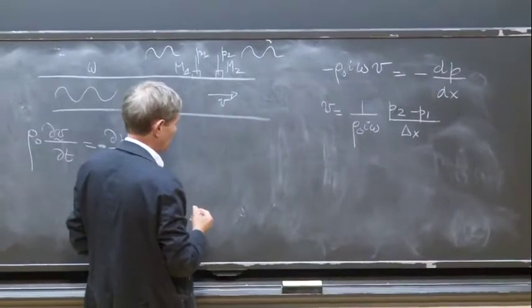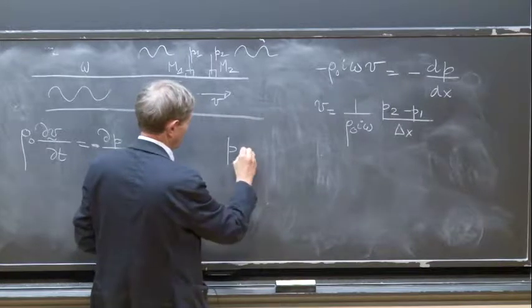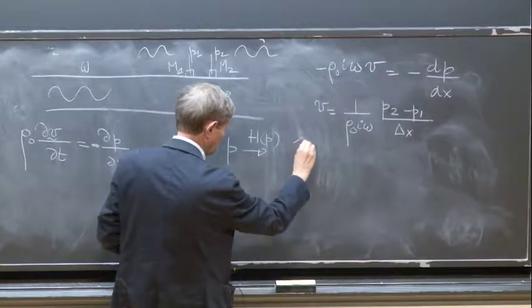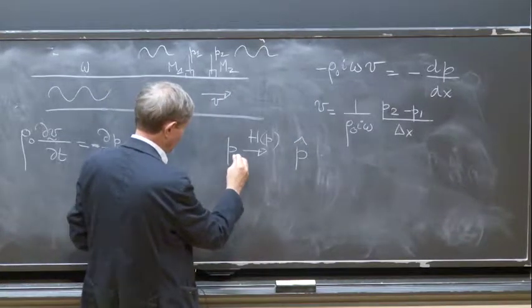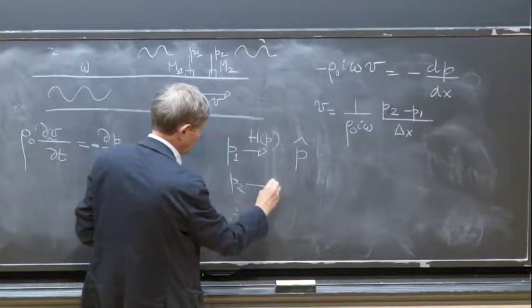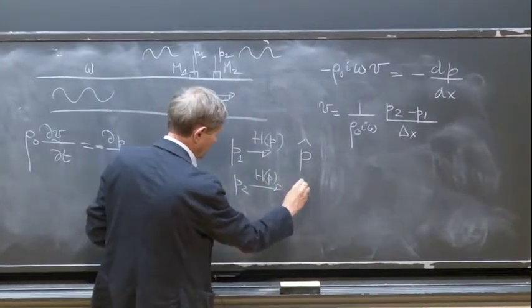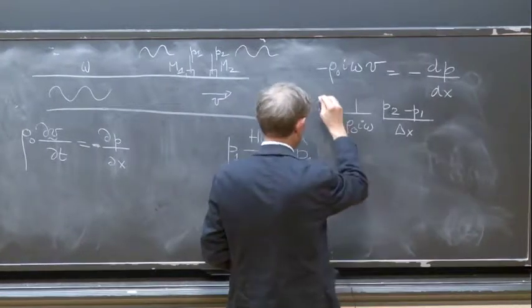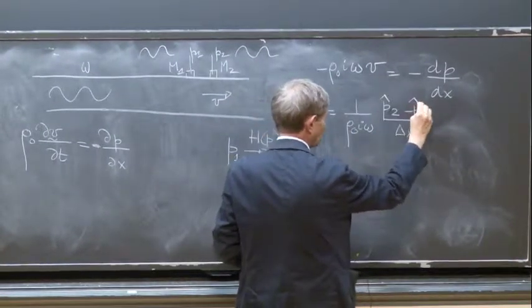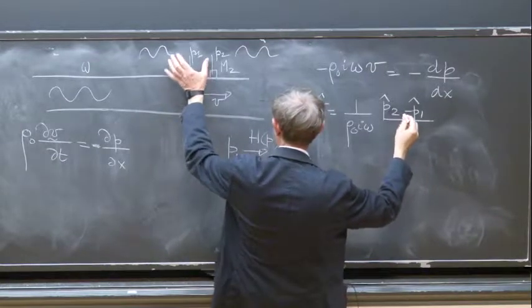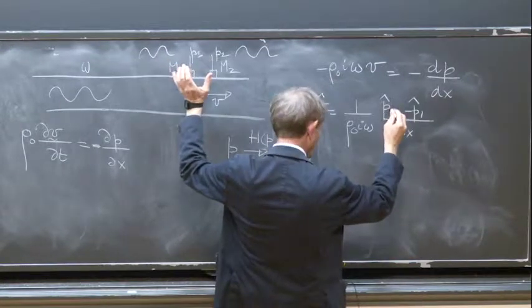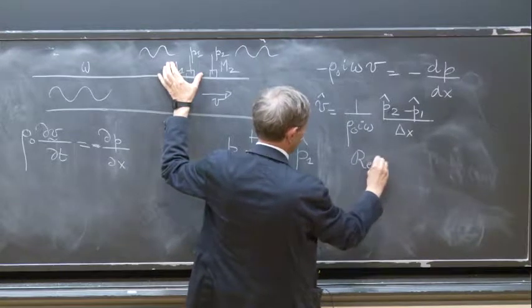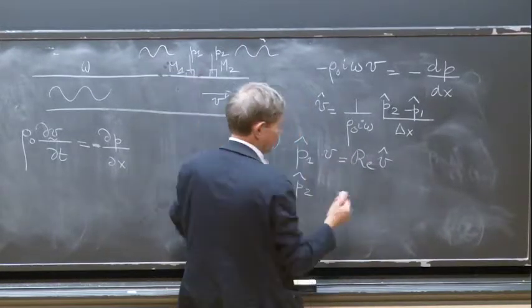You use the Hilbert transform. You take the real signal, apply the Hilbert transform, and obtain the complex signal — this is done for both P1 and P2. Then you plug the complex signals into the equation. You get a complex velocity, and then you take the real part of V to get the velocity.